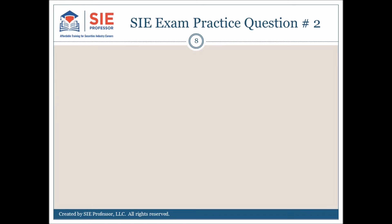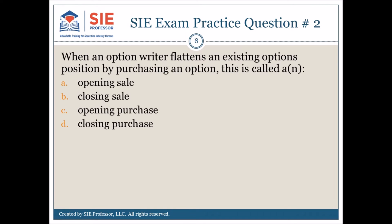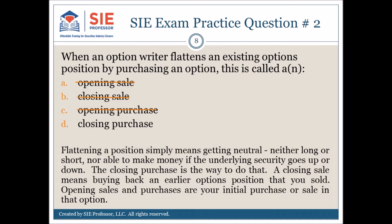SIE exam practice question and answer for number 2. Flattening a position simply means getting neutral — neither long or short, nor able to make money if the underlying security goes up or down. The closing purchase is the way to do that. A closing sale means buying back an earlier options position that you sold. Opening sales and purchases are your initial purchase or sale in that option. The answer is D.